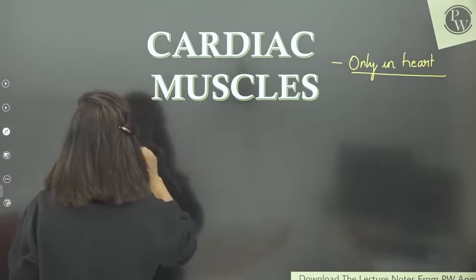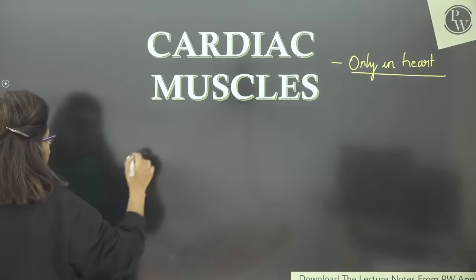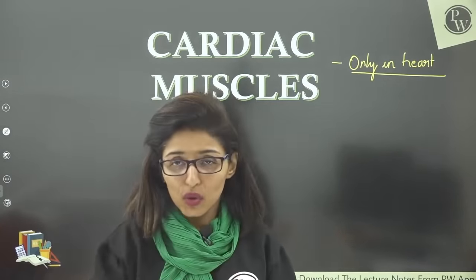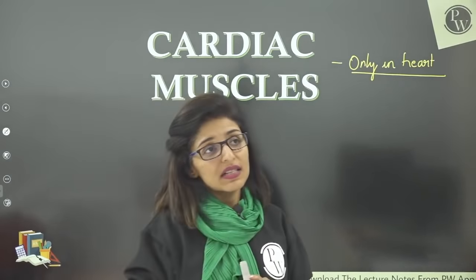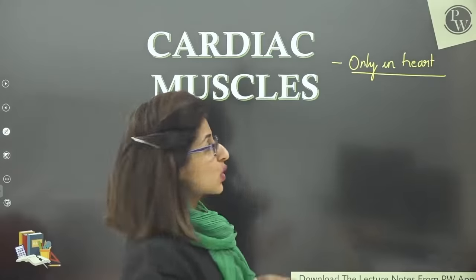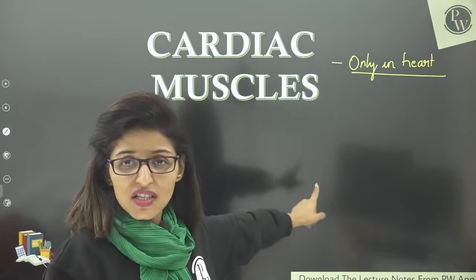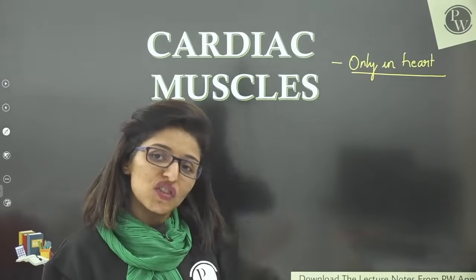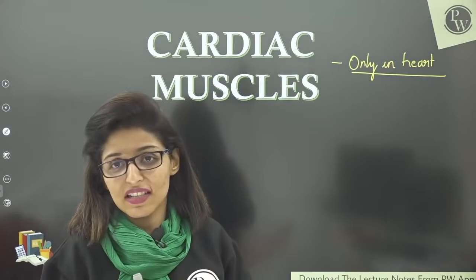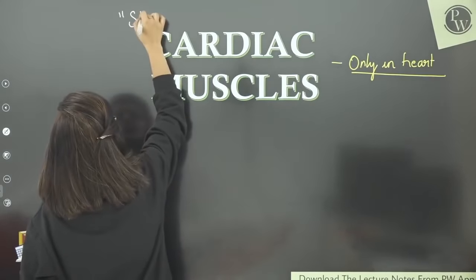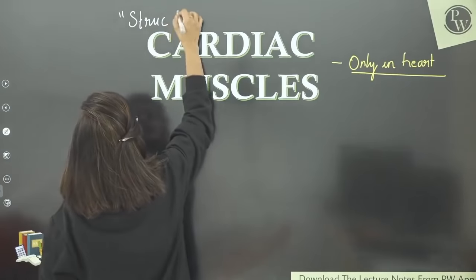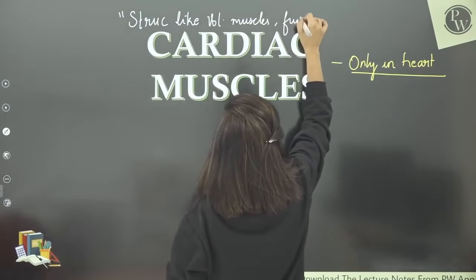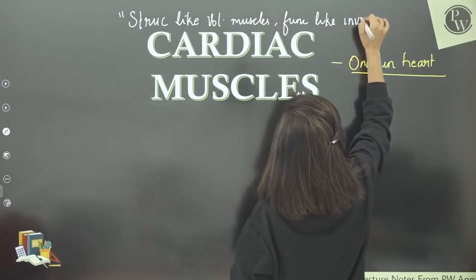Cardiac muscles are a combination of both types. Their structure is like voluntary (skeletal) muscles — almost the same. But they function like involuntary muscles — on their own, without your control. So: their structure is like voluntary muscles, and they function like involuntary muscles.